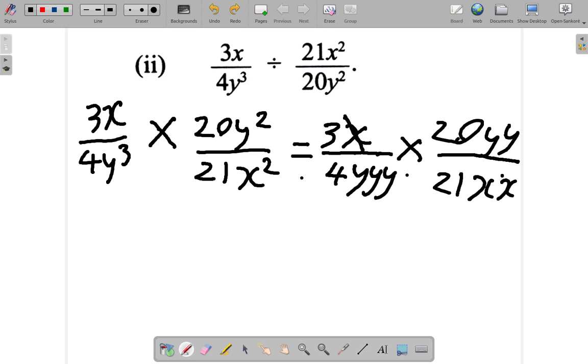So x cancels x. X into x one time. This y cancels this y, and this y cancels this y. So far, we have 3 over 4 y's, 4y. 2 of the y's are gone, 1 multiplied by 20 over 21x.